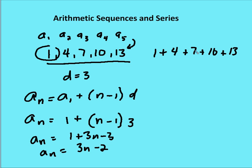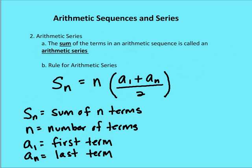And that equals 5 plus 7 is 12, plus 10 is 22, plus 13 is 35. Okay, so my series is 35. My sequence is just these terms, 1, 4, 7, 10, and 13.